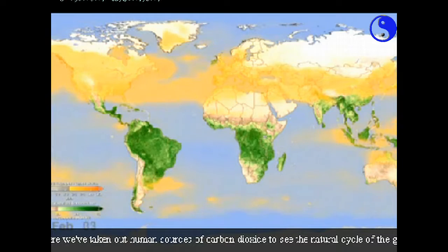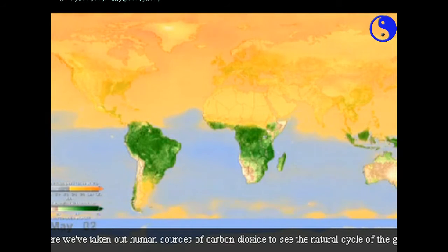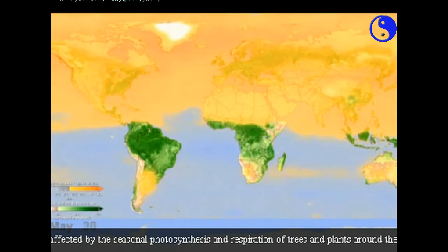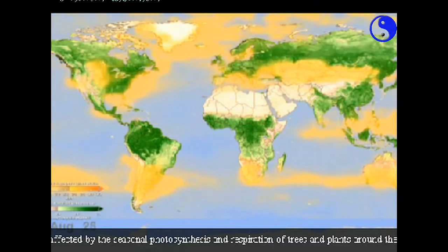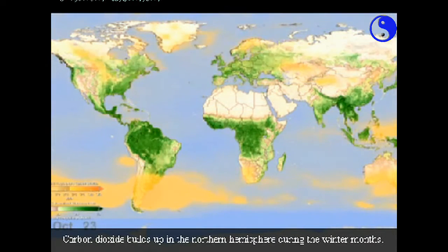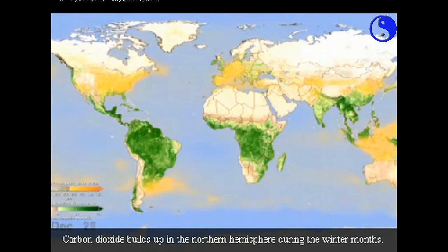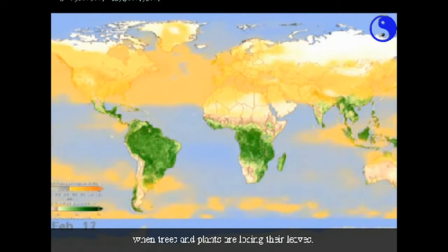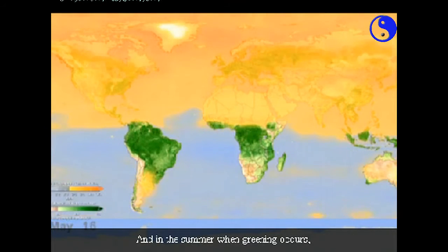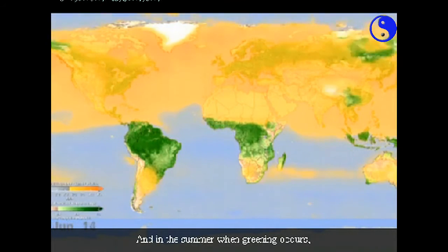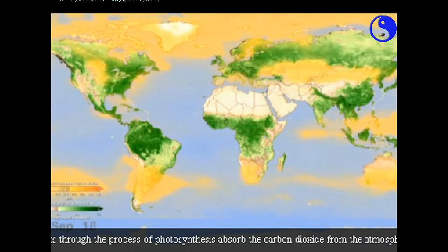Here we've taken out human sources of carbon dioxide to see the natural cycle of the gas as it's affected by the seasonal photosynthesis and respiration of trees and plants around the globe. Carbon dioxide builds up in the northern hemisphere during the winter months when trees and plants are losing their leaves. And in the summer when greening occurs, plants, through the process of photosynthesis, absorb the carbon dioxide from the atmosphere.